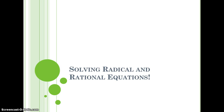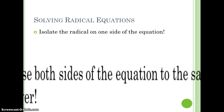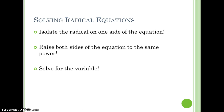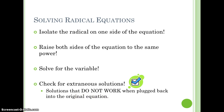This video will be about solving radical and rational equations. When we solve radical equations, first we have to isolate the radical on one side of the equation. Then we have to raise both sides of the equation to the same power, because whatever we do to one side, we have to do to the other. Then we have to solve for the variable, and then we have to check for extraneous solutions. Remember, extraneous solutions are the solutions that do not work when we plug them back in.